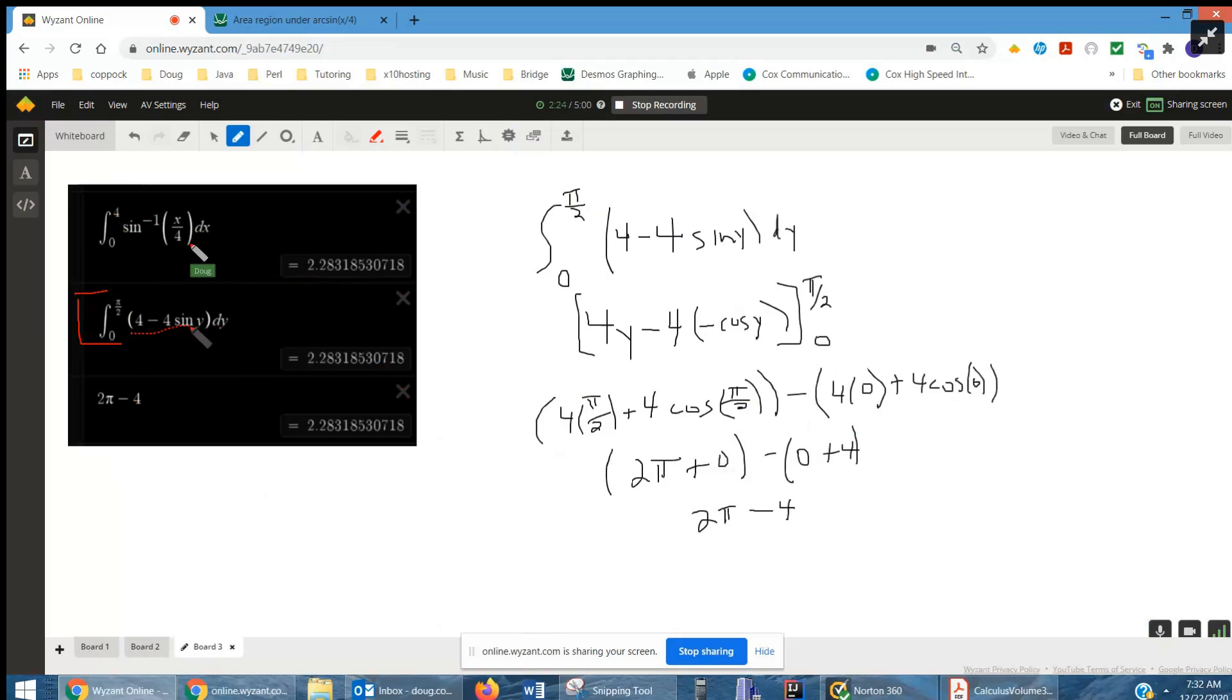There's the length of the rectangle. There's the width of the rectangle. And we're piling them on top of each other from 0 to pi over 2.